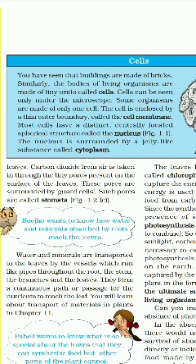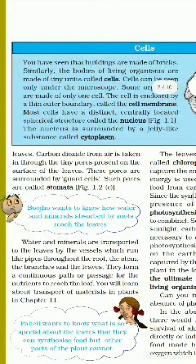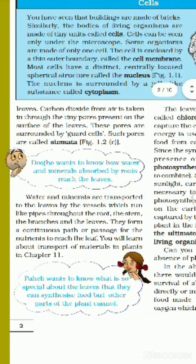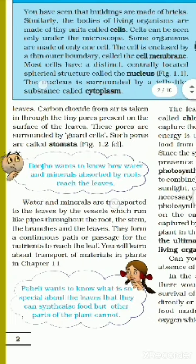Carbon dioxide is taken in through tiny pores present on the surface of the leaves. These pores are called stomata, and they are surrounded by guard cells.